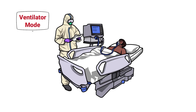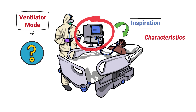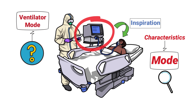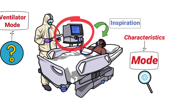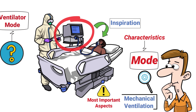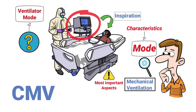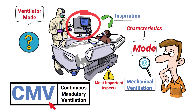A ventilator mode is a way of describing how the mechanical ventilator assists the patient with inspiration. The characteristics of a particular mode control how the ventilator functions. Understanding each of the different modes is one of the most important aspects of mechanical ventilation, and one mode that we need to talk about is CMV, or continuous mandatory ventilation. So if you're ready, let's get into it.